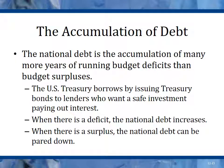The accumulation of debt: the national debt is the accumulation of many years of running budget deficits and surpluses. The difference between debt and deficit is important — the debt is the sum of all previous deficits, while the deficit is your yearly loss. Right now we're losing about $1 to $1.5 trillion a year, so after 10 years at $1 trillion per year, we would add $10 trillion to the total debt. The U.S. Treasury borrows by issuing treasury bonds to lenders who want a safe investment paying interest.